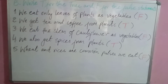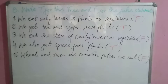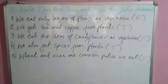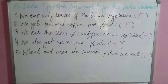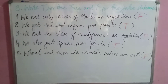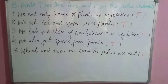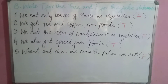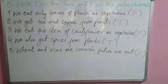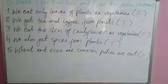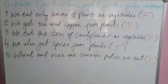Question number three: we eat stems of cauliflower as vegetables — this is a false statement, so write F. After that, we also get spices from plants — that is a true statement, so write T in the bracket.